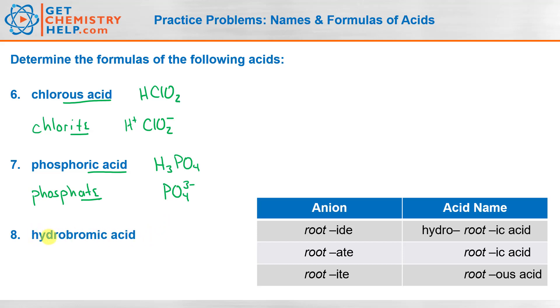Okay. Number eight, hydrobromic acid. So here I do see the hydro on the front and the ic acid on the end. So if it's hydro ic acid, that means the anion must end in ide. So it must be bromide ion.